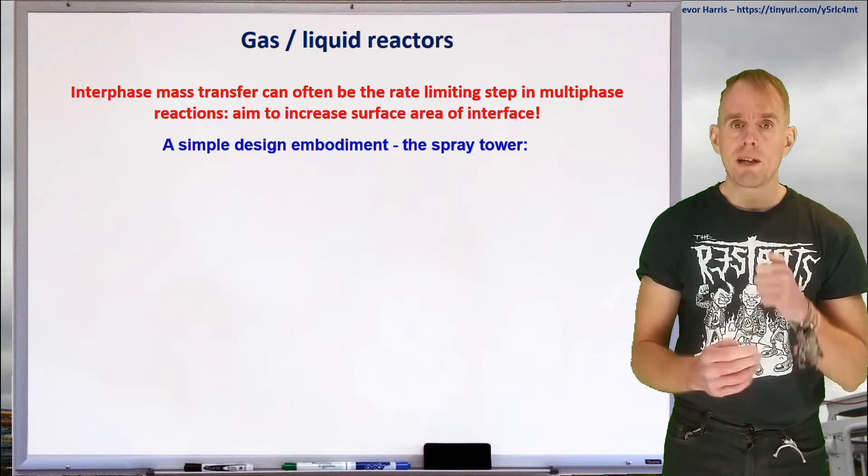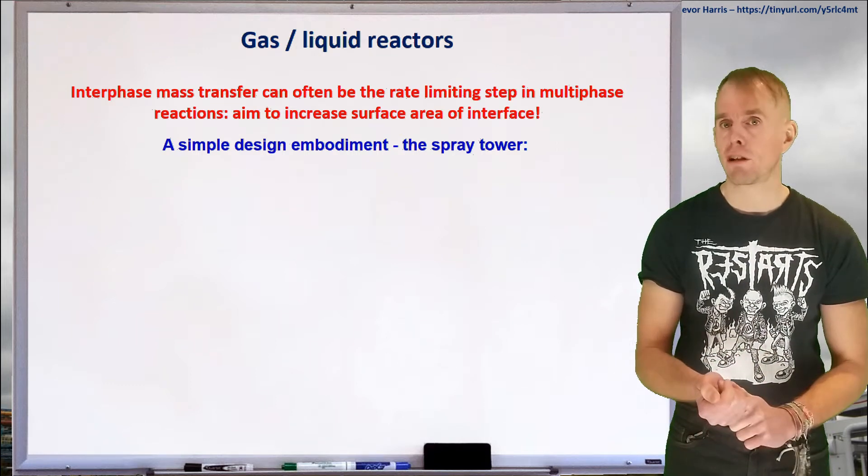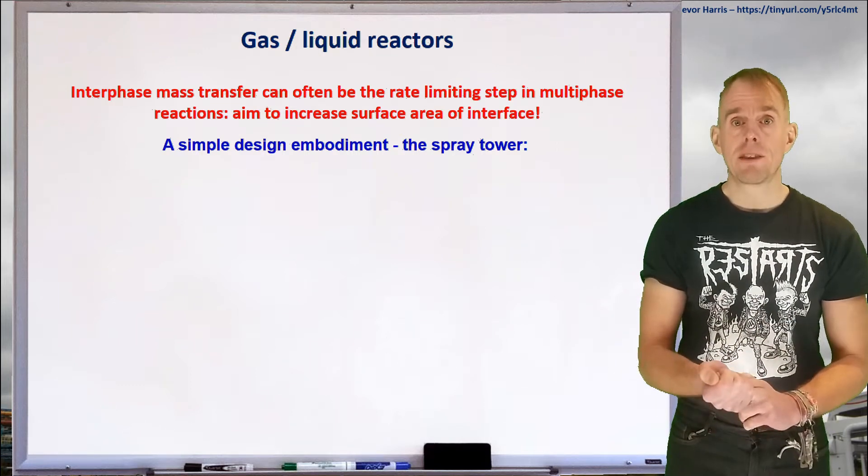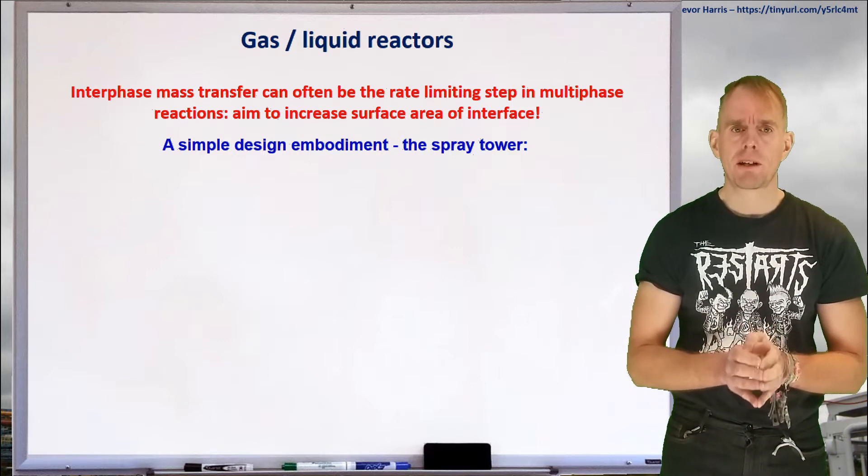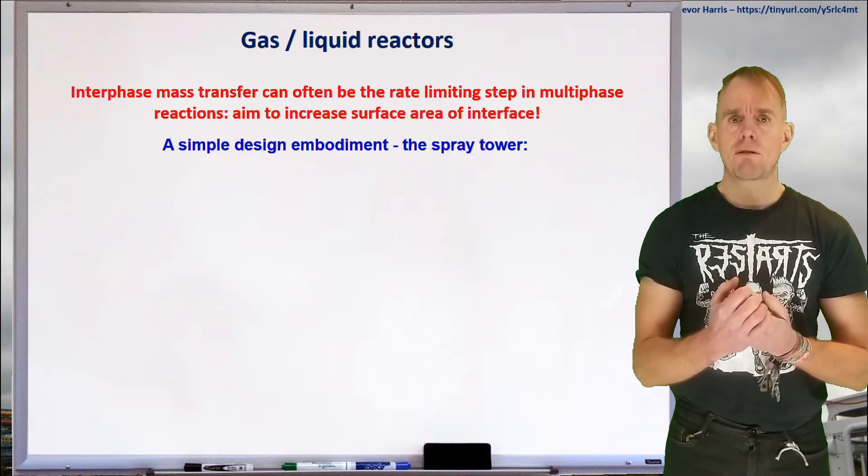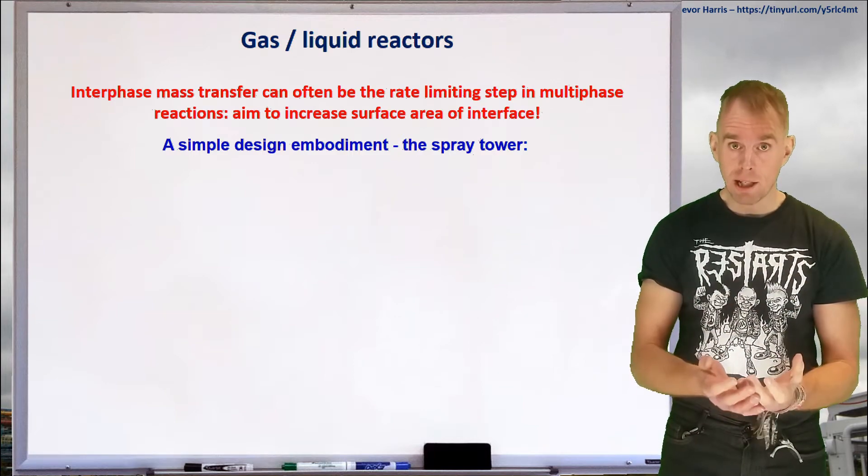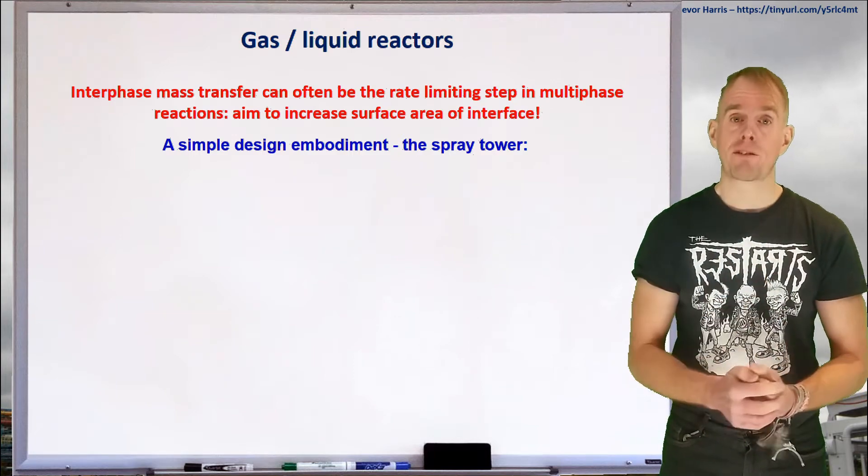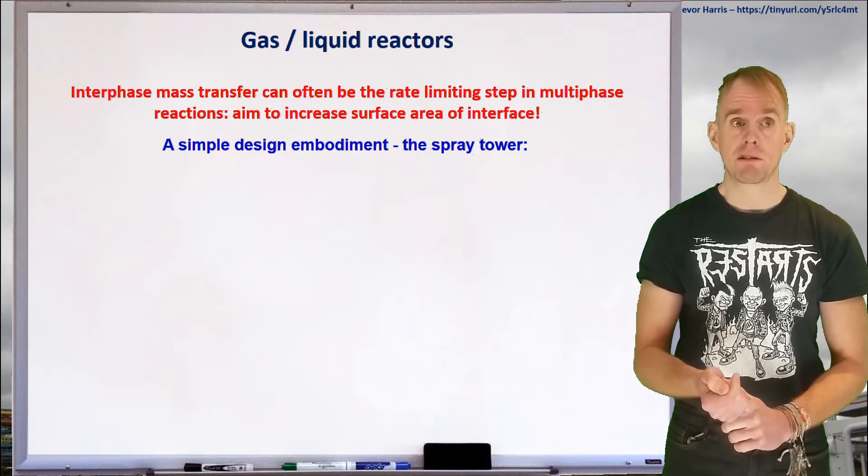And so if we increase any one of those three terms—the concentration gradient, the mass transfer coefficient, or the total area—then we can increase the mass transfer rate. So when we come to think about designing mechanical systems, let's think about increasing the total interface area. The more interface we have, the more material can pass through it for a given mass transfer coefficient and concentration gradient.